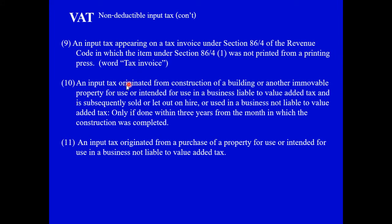Other cases include input VAT originating from the construction of a building or other immovable property used in a VAT-liable business, which is subsequently sold, leased, or used in a non-VAT business within three years — this will not be deductible for VAT but is deductible in corporate tax. However, when the building is used in a VAT business and subsequently used in a non-VAT business after three years from the month the construction is complete, the VAT already credited in the VAT system will not be treated as non-deductible input VAT, so there is no adjustment in the net profit calculation.